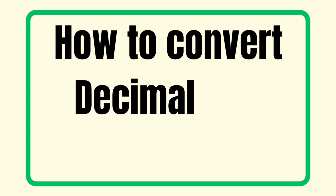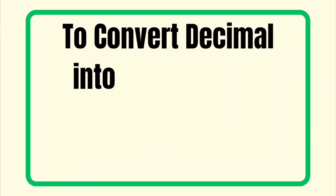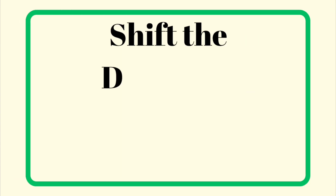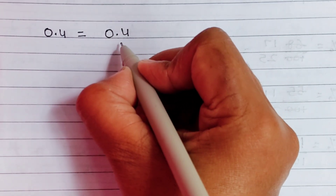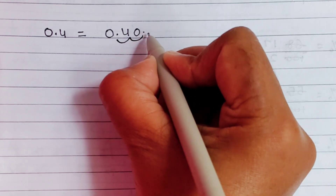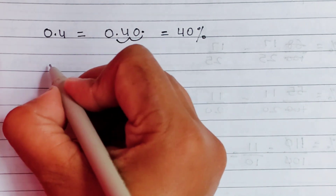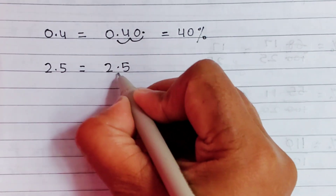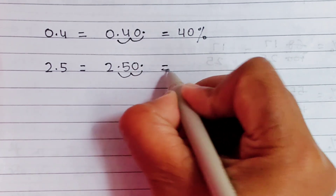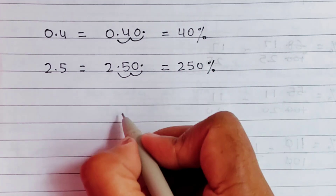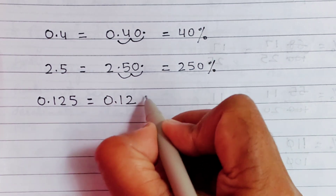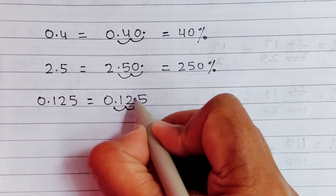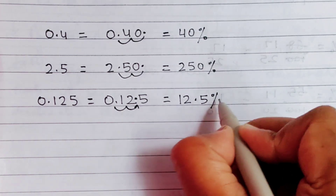Now let's learn how to convert decimal into percentage. To convert decimal into percentage, multiply the decimal by 100 — that means shift the decimal two places to the right. For example, 0.4: we shift the decimal two places to the right, so it becomes 40. That means 0.4 is equal to 40%. Next, 2.5: shift the decimal two places to the right, it becomes 250 — so 2.5 equals 250%. Next, 0.125: shift the decimal two places to the right, it becomes 12.5 — so 0.125 is 12.5%.